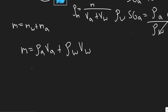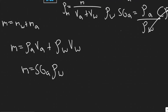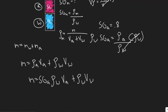Replacing ρ_A with SG_A × ρ_W, the mass M becomes: SG_A × ρ_W × V_A plus ρ_W × V_W. Now we know everything needed, so we can plug this back into the density of the mixture formula.